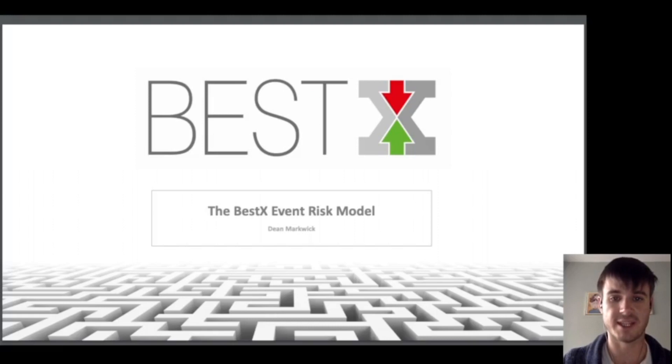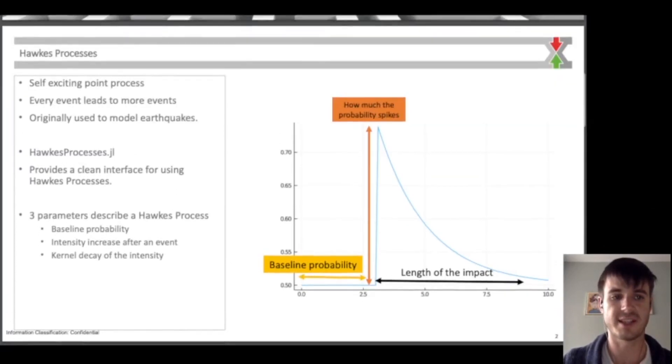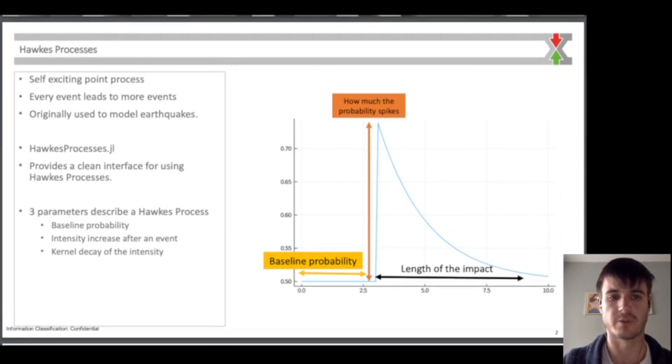Here I introduce the BestX Event Risk Model, which is built using Hawkes processes. This is a self-exciting point process where each event leads to further events.